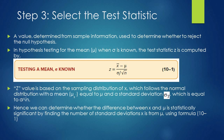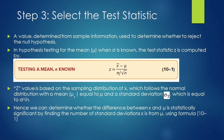Z values are based on the sampling distribution of X-bar, which follows a normal distribution with mean mu-X-bar equal to mu, and standard deviation sigma-X-bar equal to sigma over the square root of n. We compare the computed value with the critical value. We determine whether the difference between X-bar and mu is statistically significant by finding the number of standard deviations X-bar is from mu using this formula.